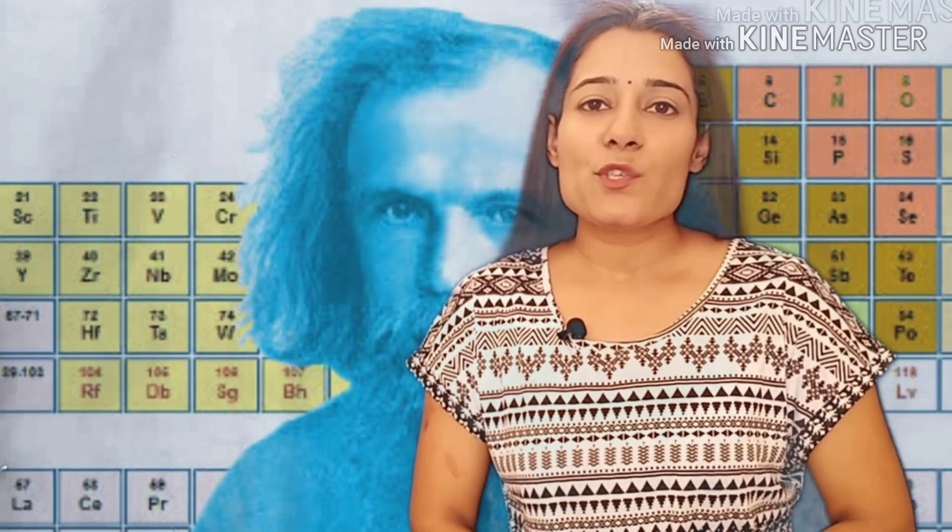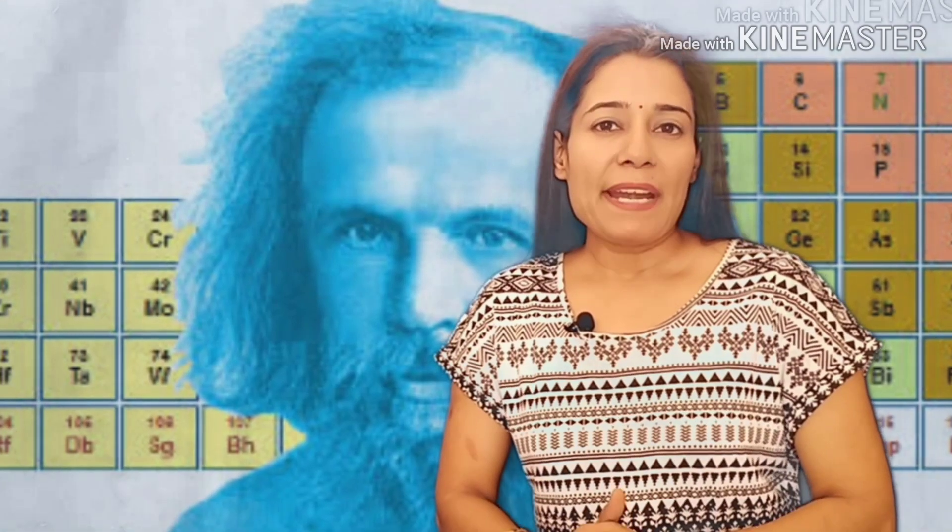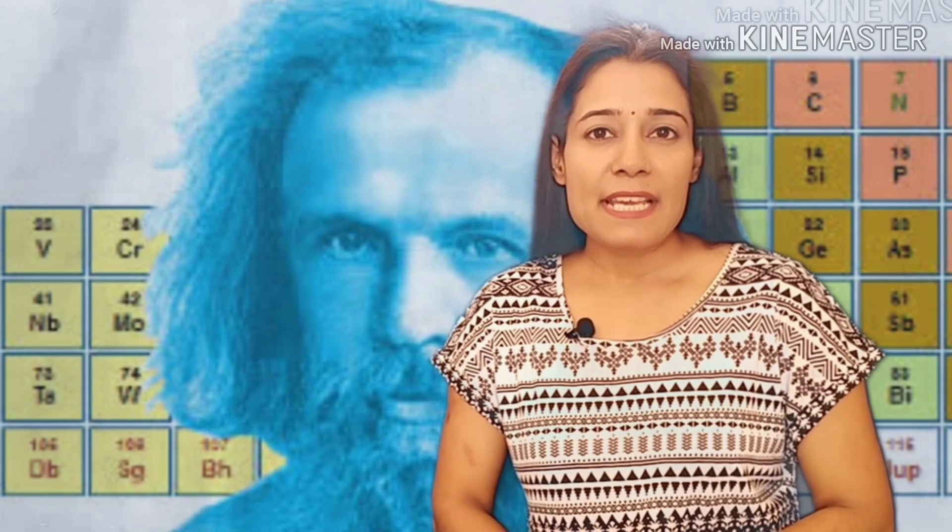When Mendeleev started his work, 63 elements were known. He not only arranged all these elements on the basis of their increasing atomic masses, but also examined the relationship between their atomic masses and their physical and chemical properties. For chemical properties, Mendeleev examined oxides and hydrides of each and every element. That means he made compounds from the combination of each and every element with oxygen and hydrogen.